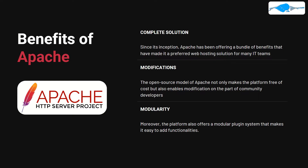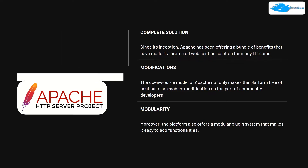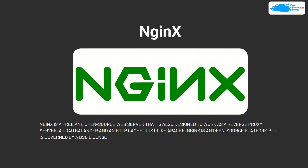The second benefit is the capability of modification. The open source model of Apache not only makes the platform free, but also enables modification by community developers, so you can find any type of module you want from the community. Third is modularity — Apache offers a modular plugin system that makes it easy to add more functionalities to your server.